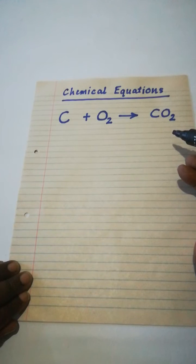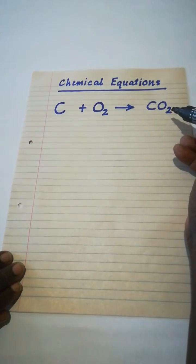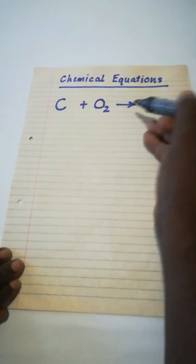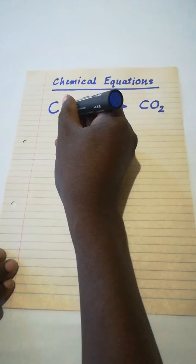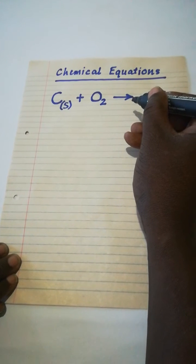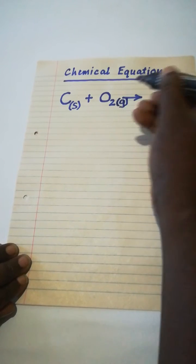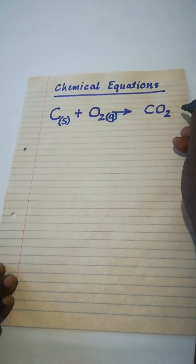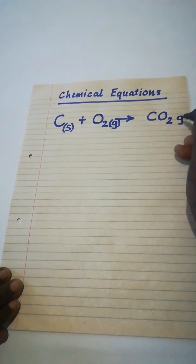What is remaining is we need to indicate the state symbols of the substances reacting and produced. That is, reactants and products. Carbon, we know is a solid. Charcoal, for example, is a solid. Oxygen is a gas, so we indicate that by using G in bracket. Carbon dioxide is also a gas. We know it is part of the atmosphere, so we write G.